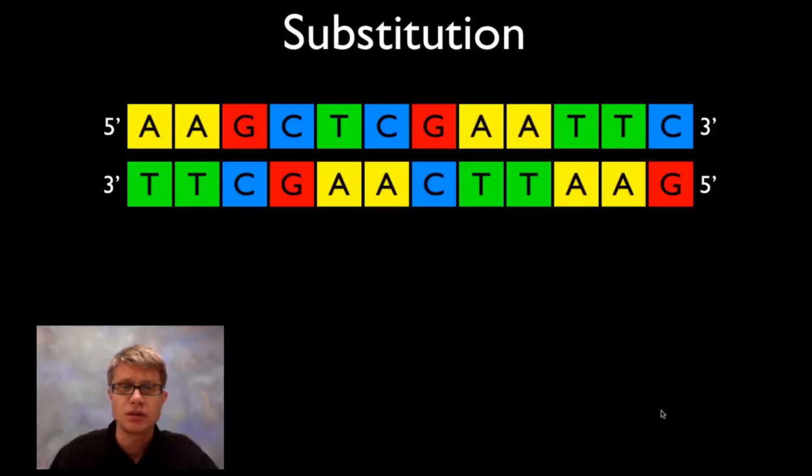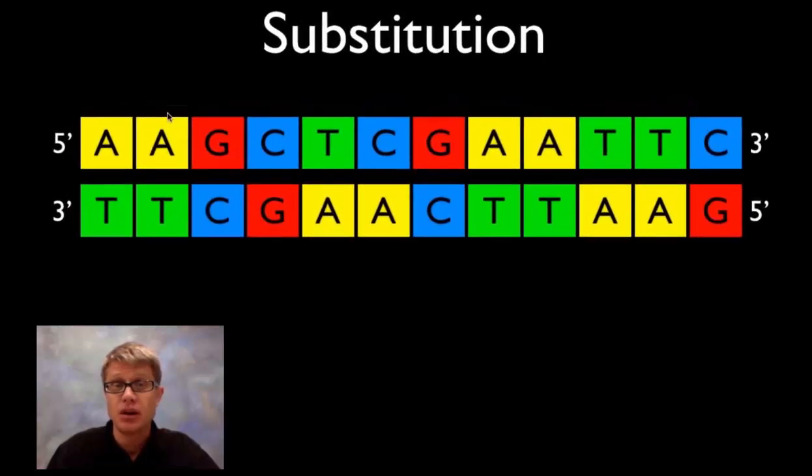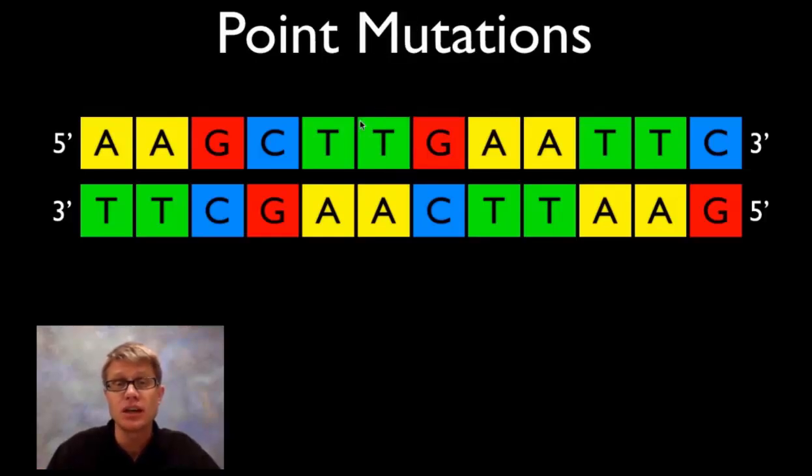This is called a substitution mutation. Right here we've added a C instead of a T. You might think that's bad, but we've got protection for that inside our cell. Proteins are going to cruise up and down our DNA, and when we have A bonded to C, it's not going to quite match up. These enzymes could cut out the C and put the T back in again. That would be no problem.